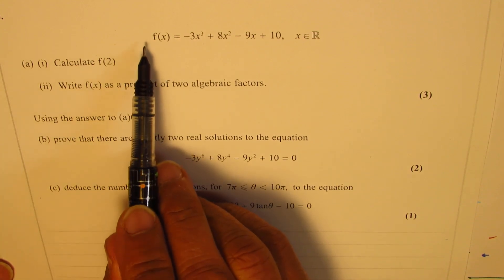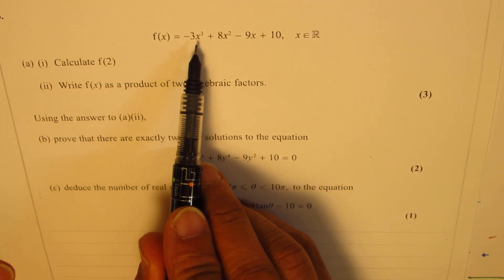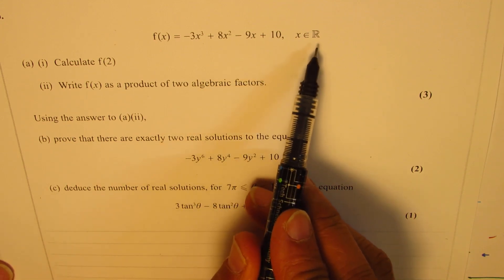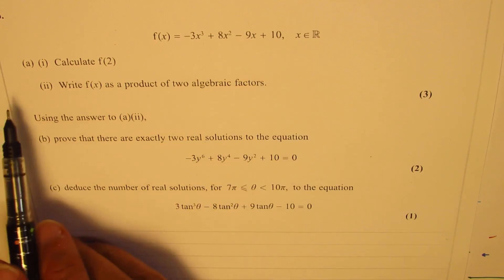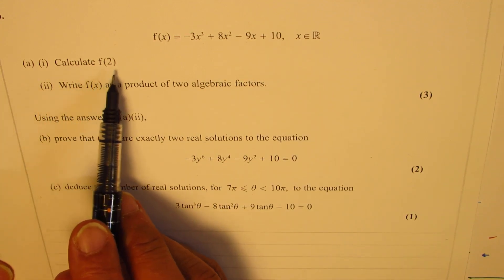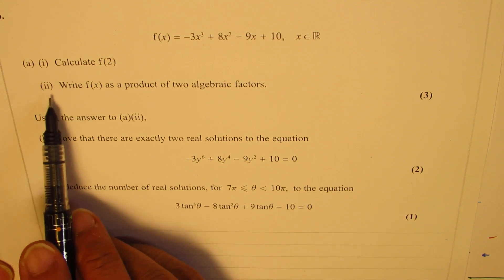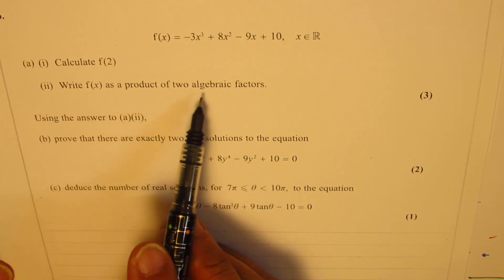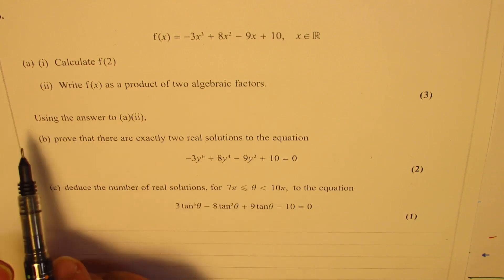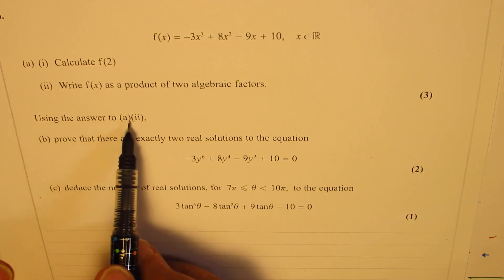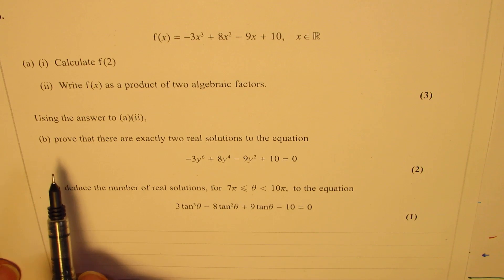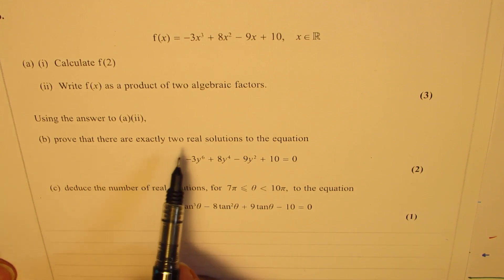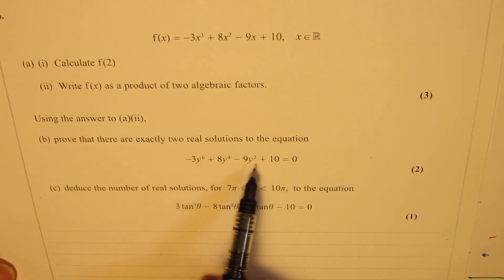The function f of x is equal to minus 3x cubed plus 8x squared minus 9x plus 10, where x belongs to real numbers. Part A is: calculate f of 2, and write f of x as a product of two algebraic factors using the answer of part 1a. Part B is: prove that there are exactly two real solutions to the given equation.